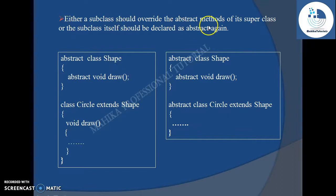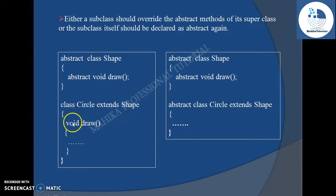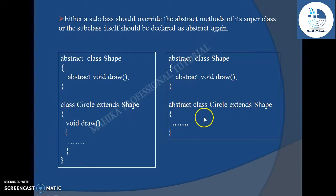Either a subclass should override the abstract methods of its superclass, or the subclass itself should be declared as abstract again. For example, if we have a class Shape with an abstract method draw, and we create a subclass Circle which extends Shape, then Circle must mandatorily override the draw method, or you will get a compilation error. But if a subclass does not want to override any abstract method of its superclass, then that subclass needs to be declared as abstract again.